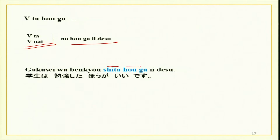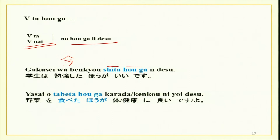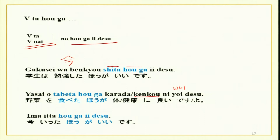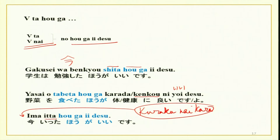It is better that students study: gakusei wa ima benkyou shita hou ga ii desu. Yasai wo tabeta hou ga karada ni yoi desu — it is better for your health to eat vegetables. Ima itta hou ga ii desu — it is better that you go now. You will see that all examples have the plain past form before hou ga — that is the important part. It means 'it is better to,' basically a strong suggestion.